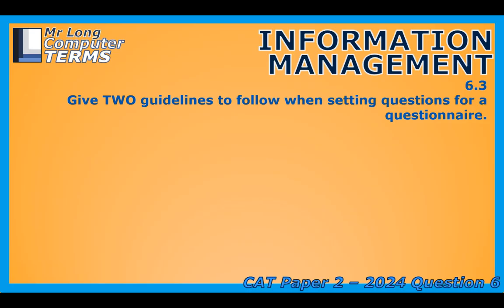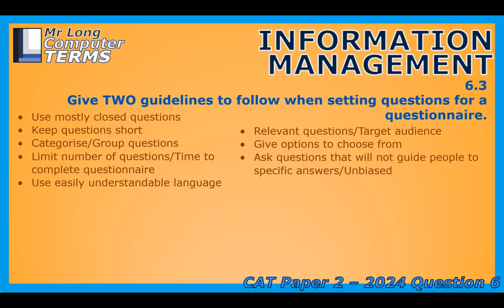When it comes to questionnaires, the most important tip is using closed questions — short questions that are easy to answer and easy to do calculations on. These include yes/no questions, rating scale questions from one to five, multiple choice, or questions where the answer is a number. Those are questions you can actually do statistics on. Try to keep your questions short so you don't bore the respondent, and group your questions into categories so they can see the theme — for example, biographical data at the top and different topics later on. The shorter the questionnaire, the more likely people are to fill it in honestly.